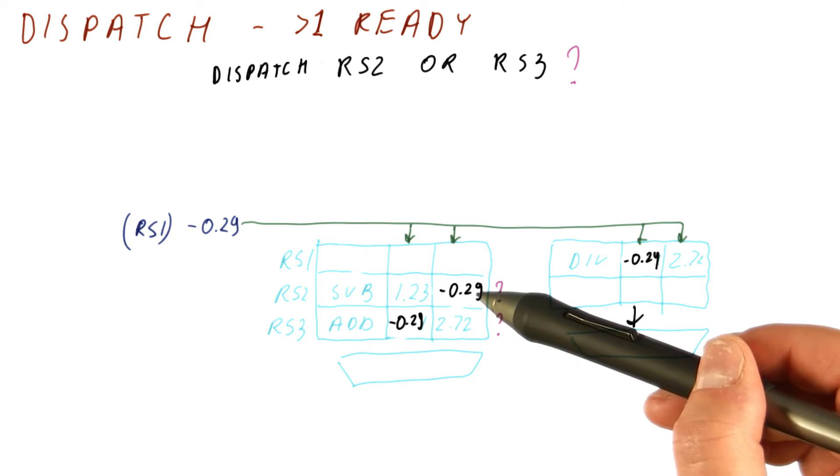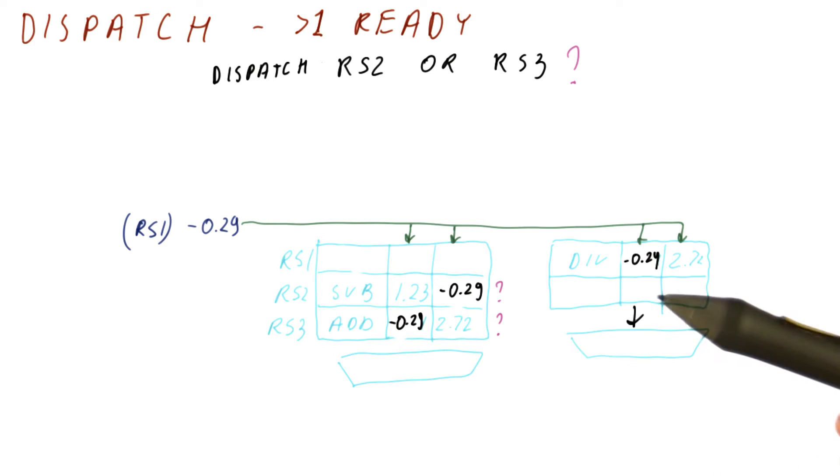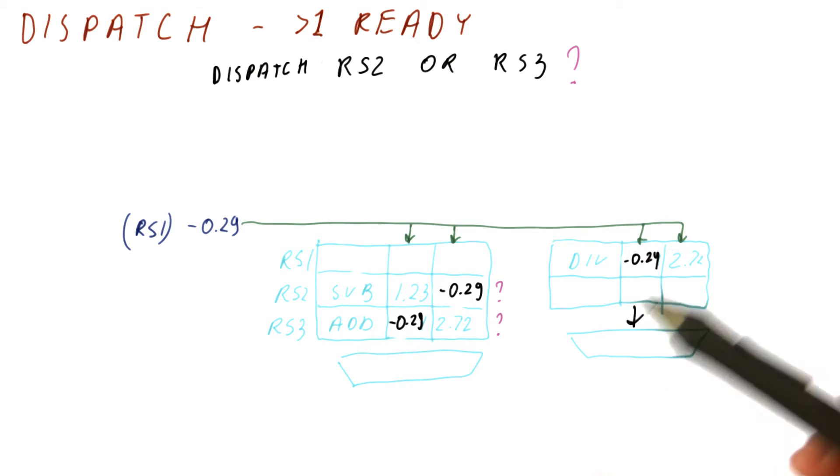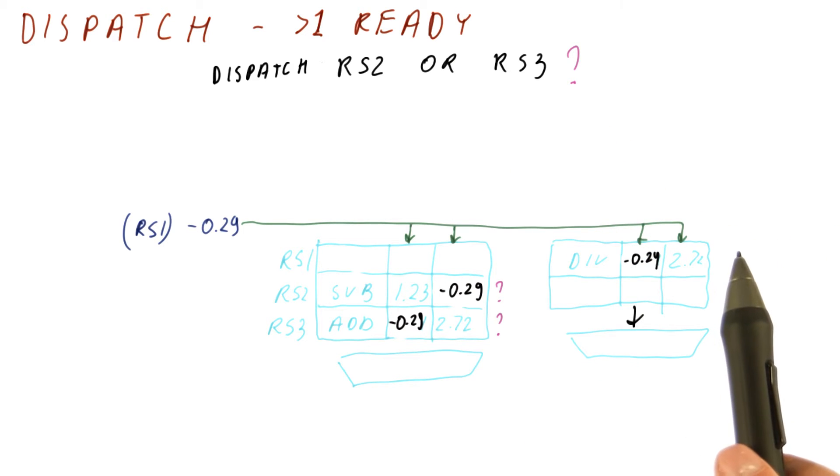While in reality, the situation might change because, for example, this instruction might have a lot of dependent instructions later on, and this one might have a few, but we don't know that until we see a lot of instructions later on. So it's very difficult to decide based on perfect knowledge of the future.